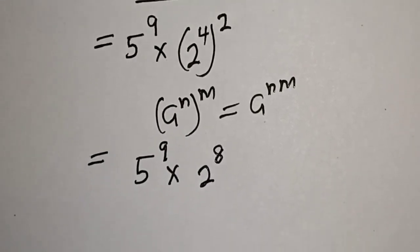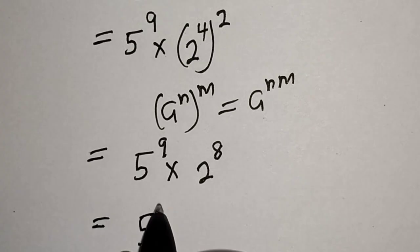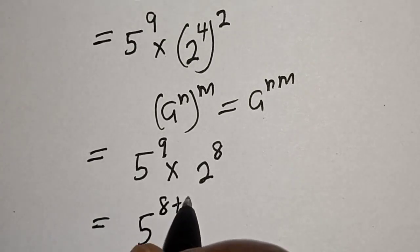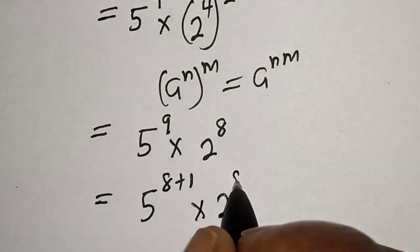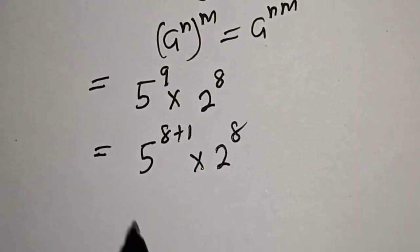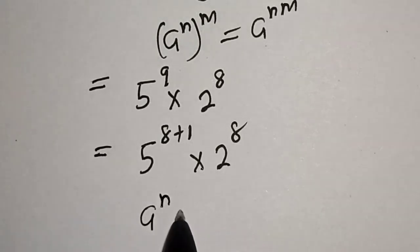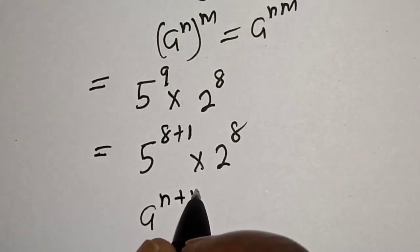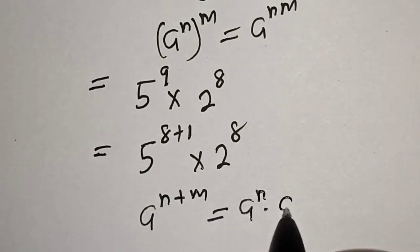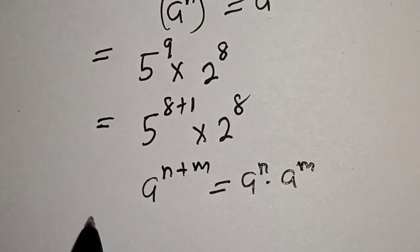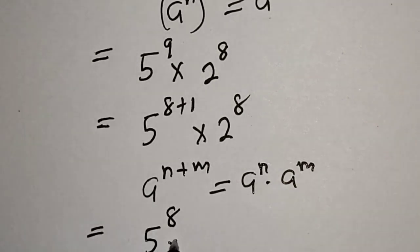This is equal to 5 raised to power 8 plus 1, multiplied by 2 raised to power 8. Remember the rule that a raised to power n plus m equals a raised to power n multiplied by a raised to power m. So this becomes 5 raised to power 8 multiplied by 5 raised to power 1, multiplied by 2 raised to power 8.